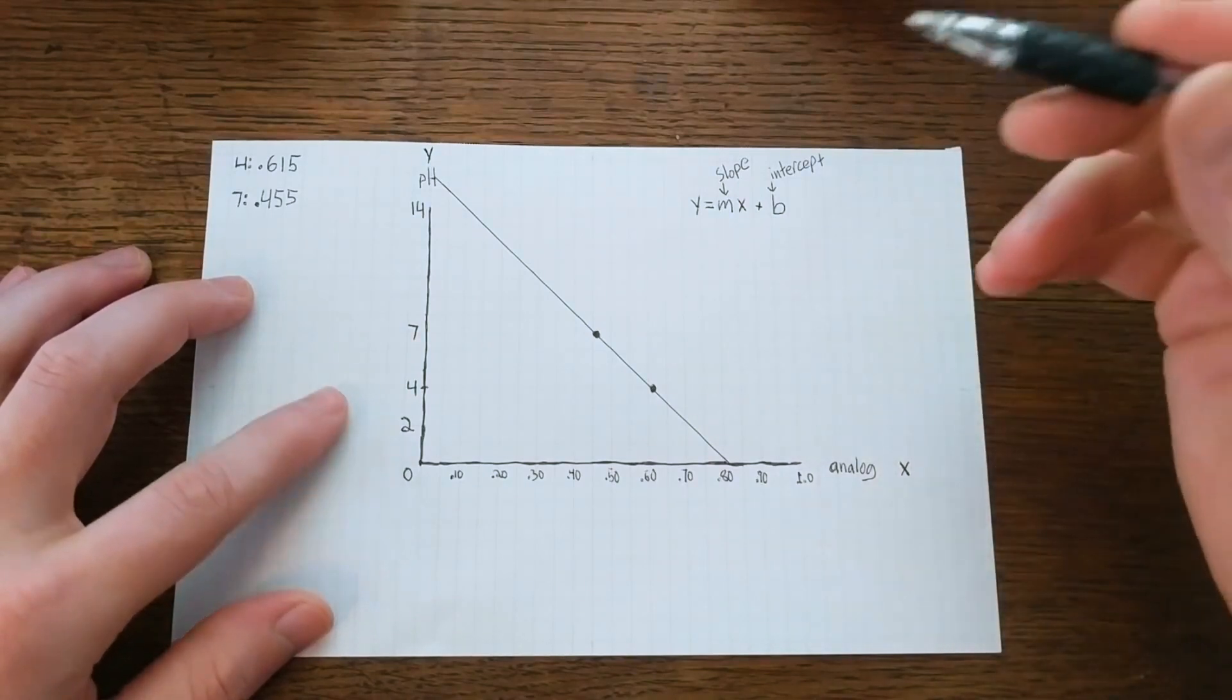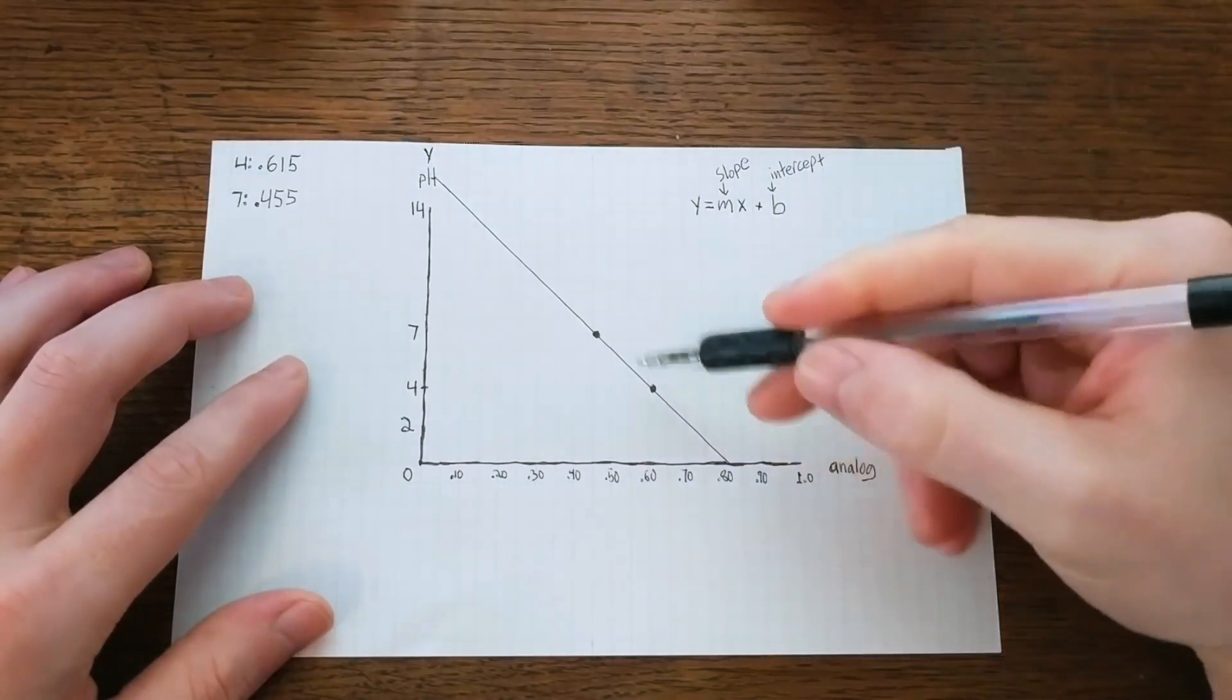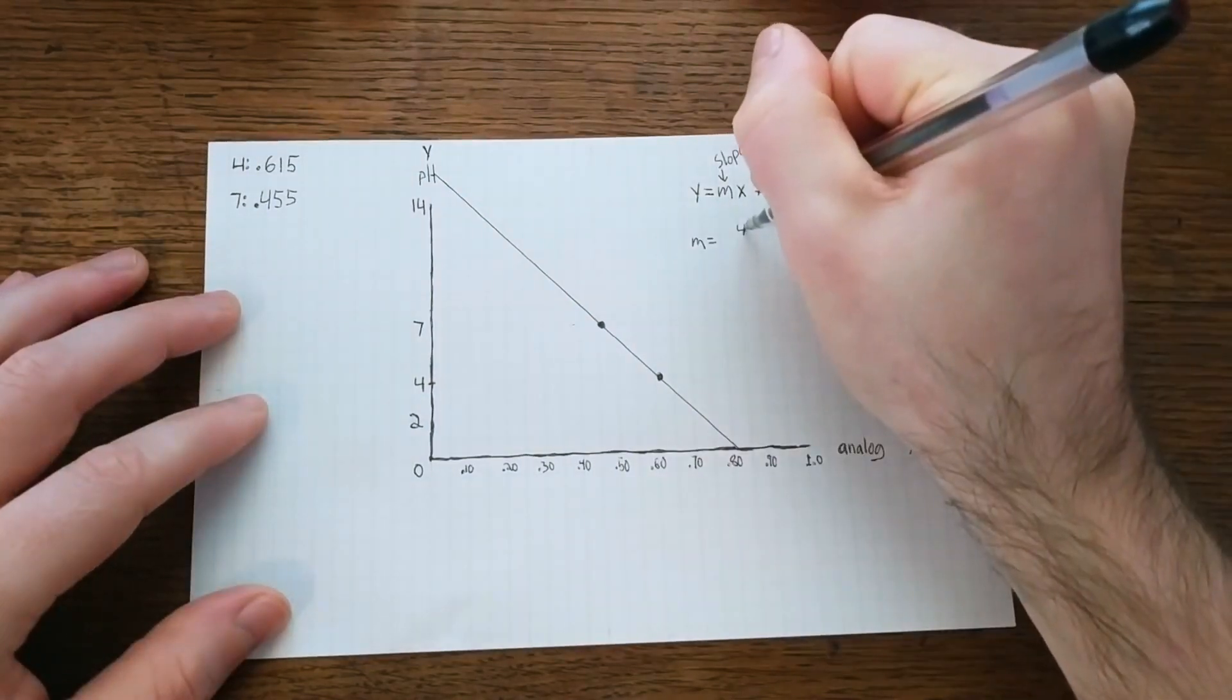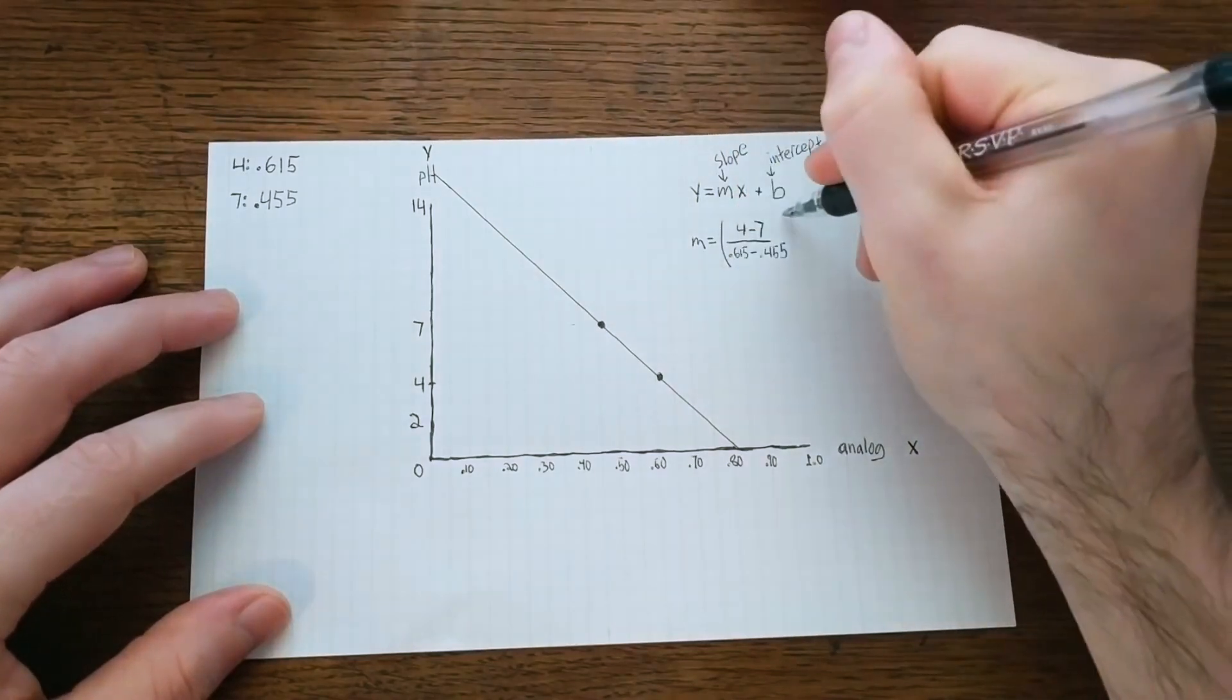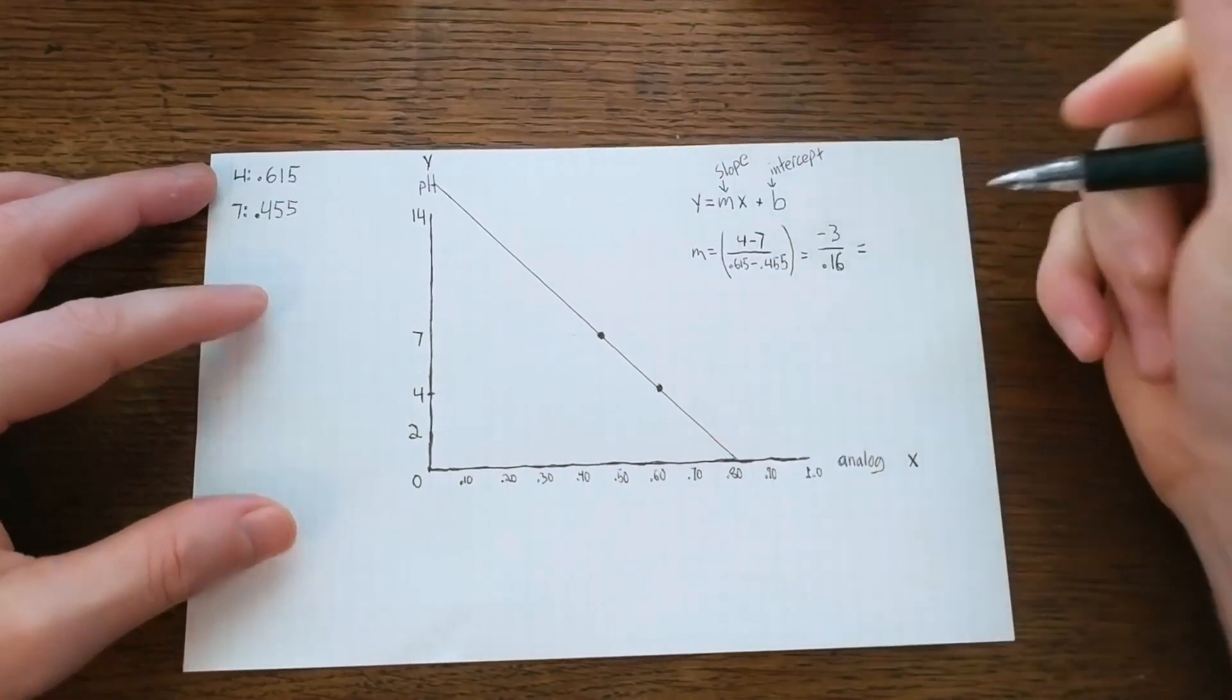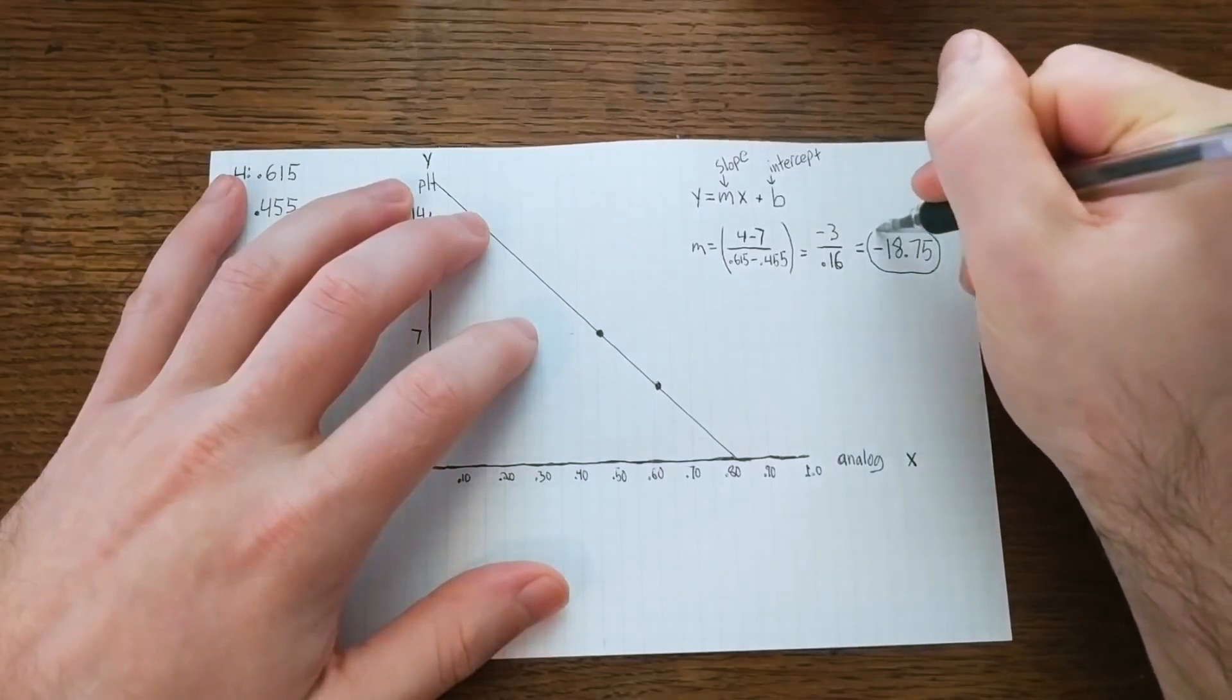You might remember how to calculate the slope using the mnemonic rise over run, which basically means it's the change in y divided by the change in x. So in this case, that'll be 4 minus 7 divided by 0.615 minus 0.455. And if you do the math, that ends up being negative 3 divided by 0.16, or in other words, negative 18.75.